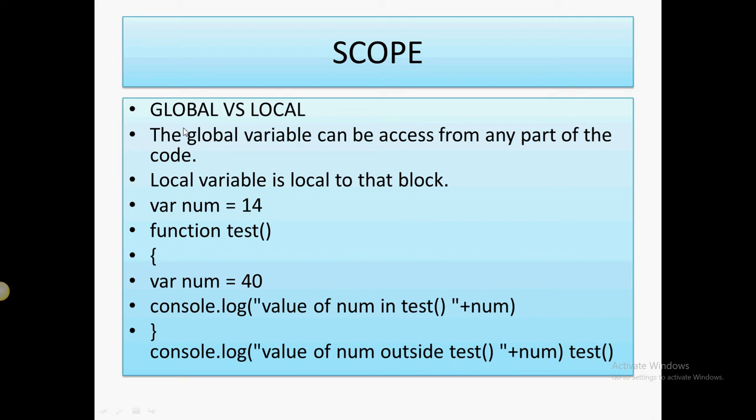If we are going to declare a variable using var, the scope of that variable is global. And if we are going to declare a variable using let, the scope of that particular variable is within that particular block, whether that is a function or a particular if statement. So the scope of let is within that block.